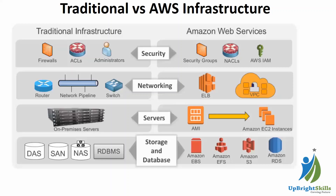For the storage and database layer, in traditional infrastructure we had our own servers with databases like MySQL, MSSQL, and PostgreSQL, and storage options like network-attached storage or storage area networks. In AWS, we can use Amazon RDS — Relational Database Service — to create MySQL, PostgreSQL, or other database instances. For storage, we can use Amazon EBS (Elastic Block Storage), Amazon EFS (Elastic File System), and Amazon S3.